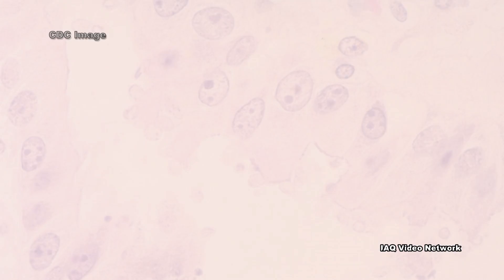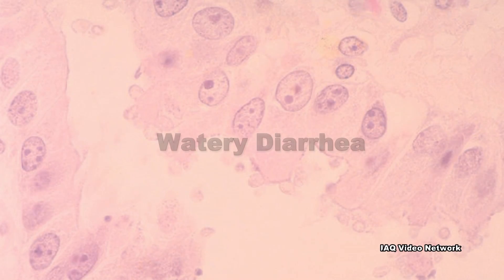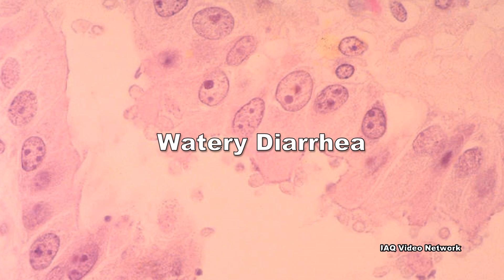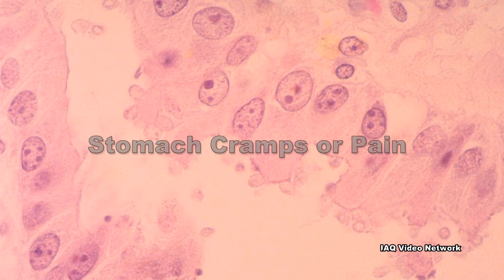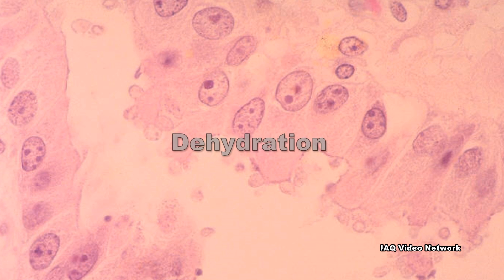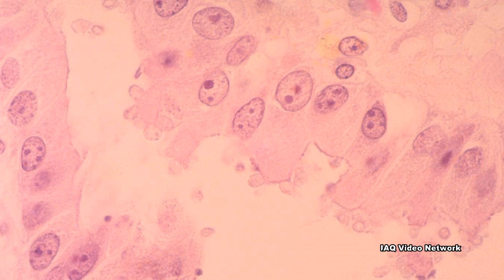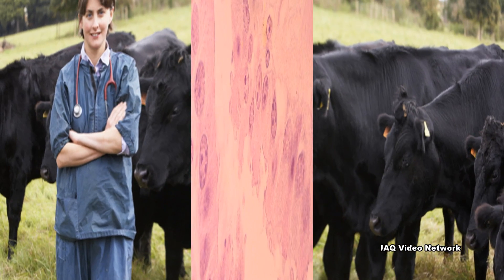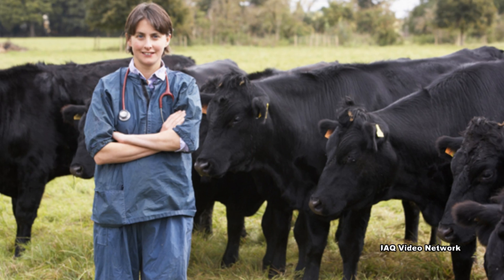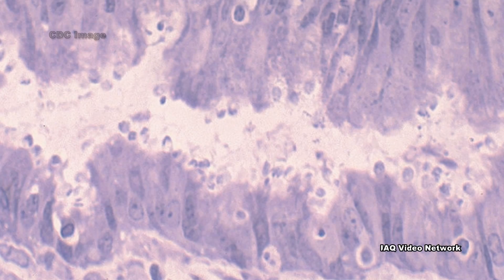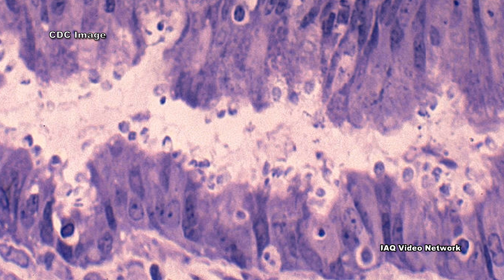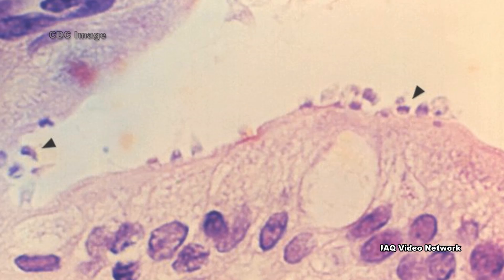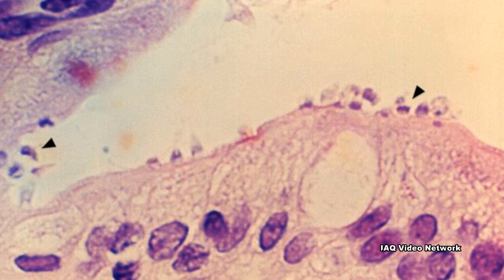The most common symptom of Cryptosporidiosis is watery diarrhea. Other symptoms include stomach cramps or pain, dehydration, nausea, vomiting, fever, and weight loss. Some people with Crypto will have no symptoms at all. While the small intestine is the site most commonly affected, Crypto infections could possibly affect other areas of the digestive tract or the respiratory tract.